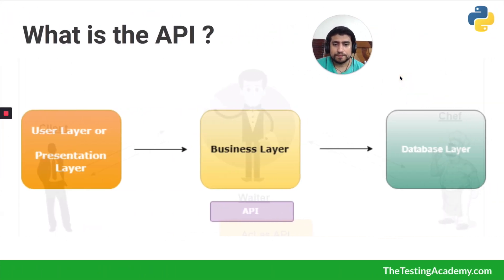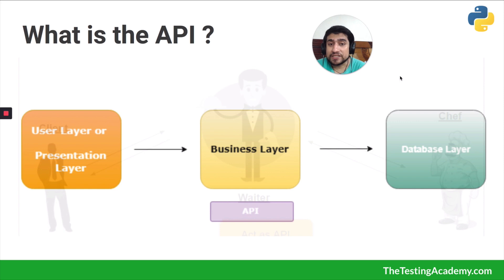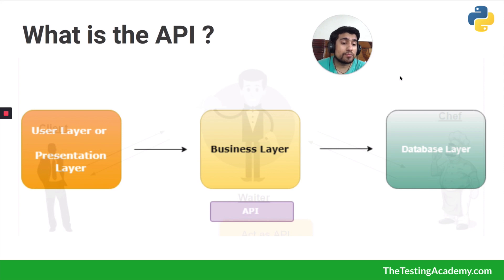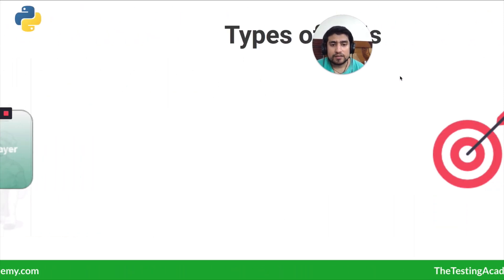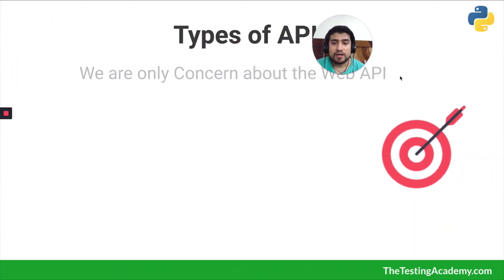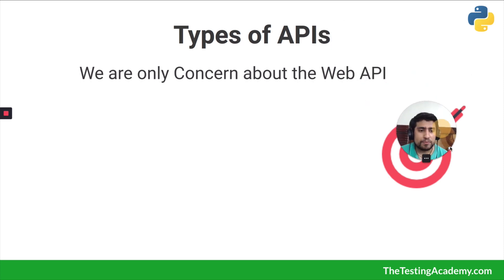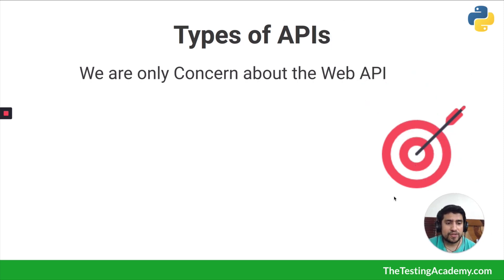You are the user, or the presentation layer. The waiter acts as the business layer, which is the core logic where everything is understood. It then requests from the database layer or the server. That is where the communication is happening.